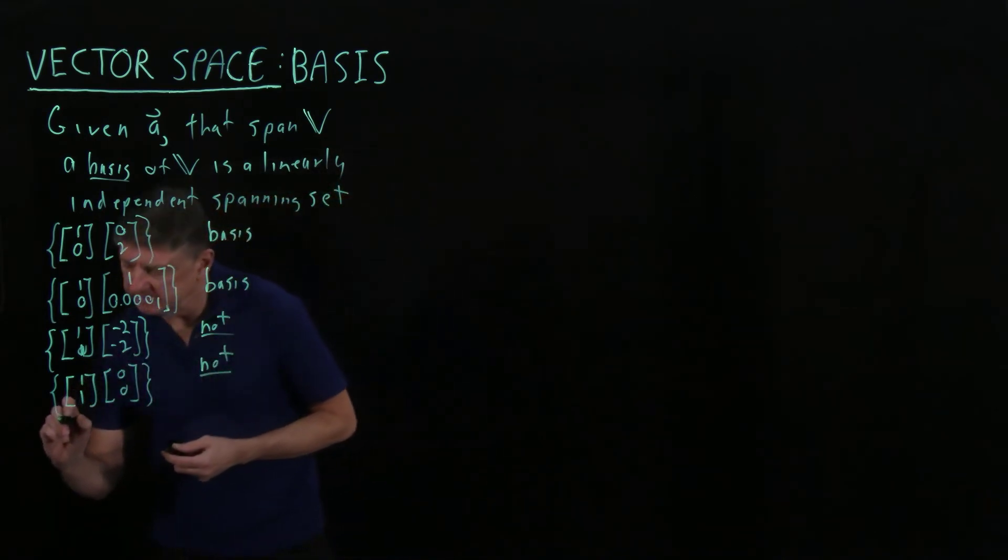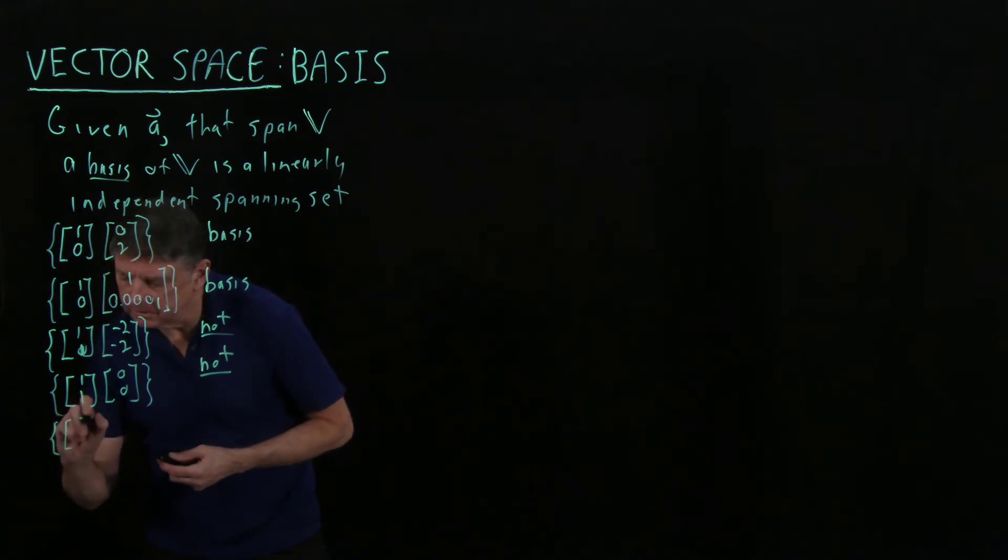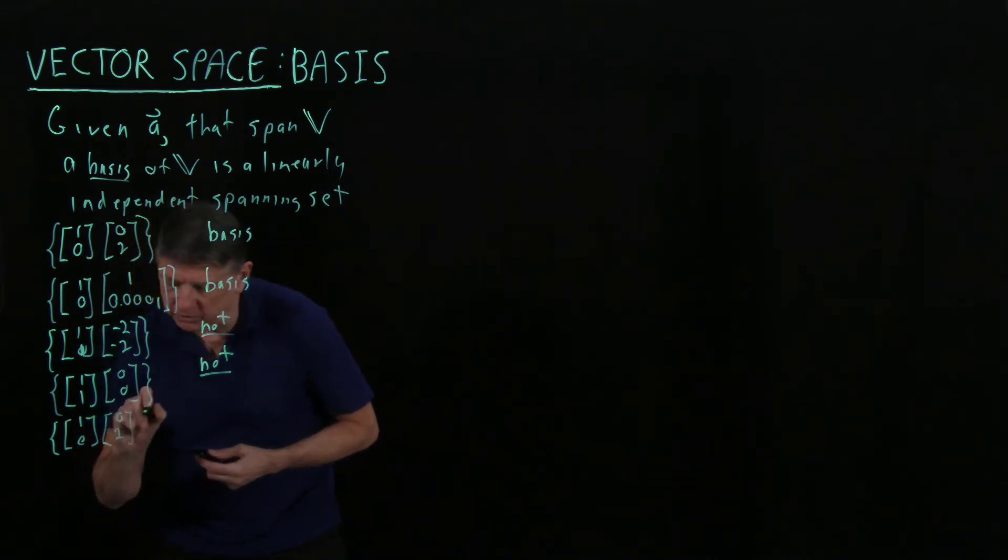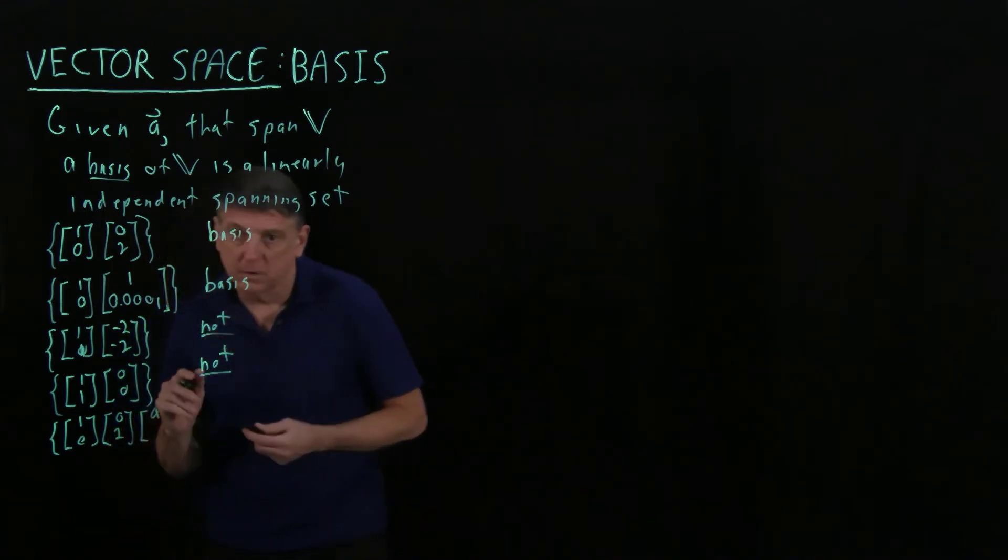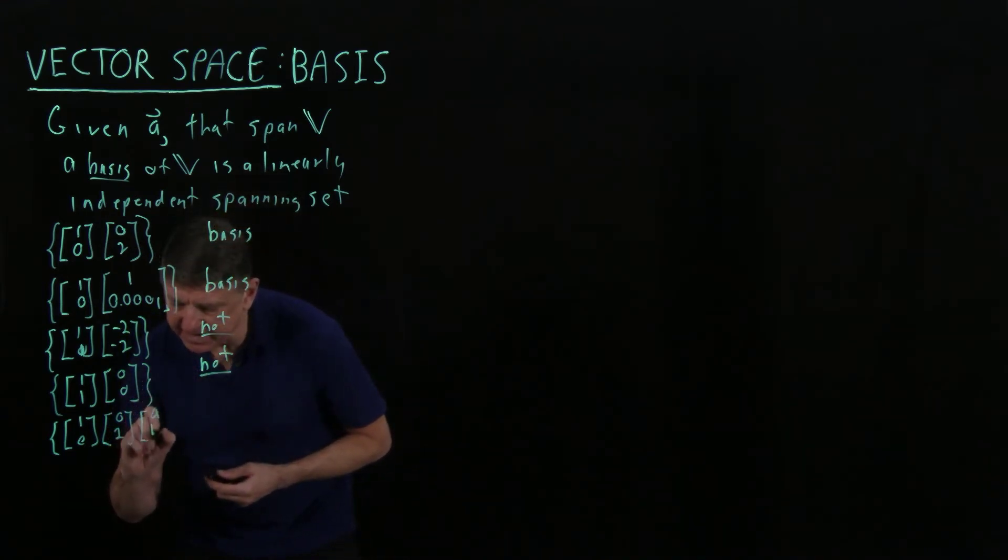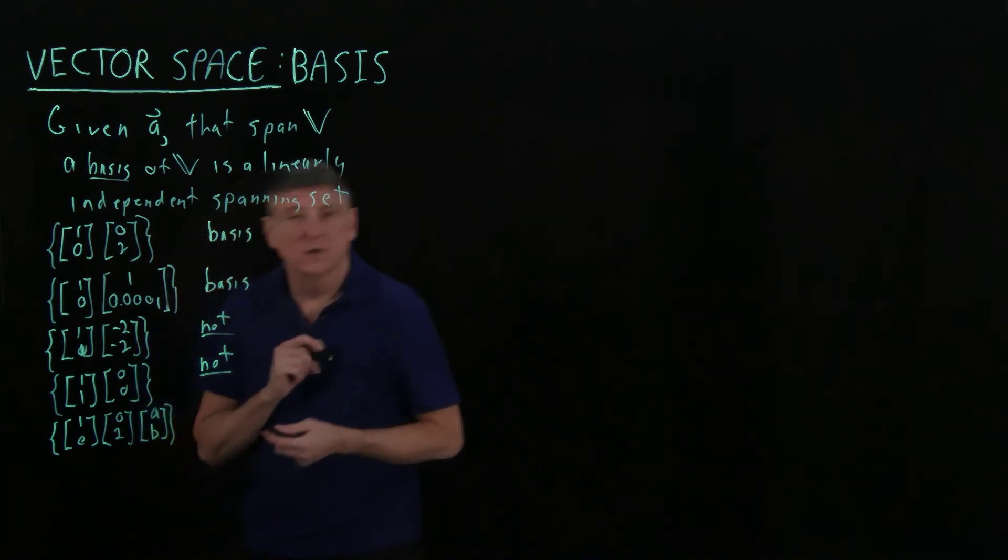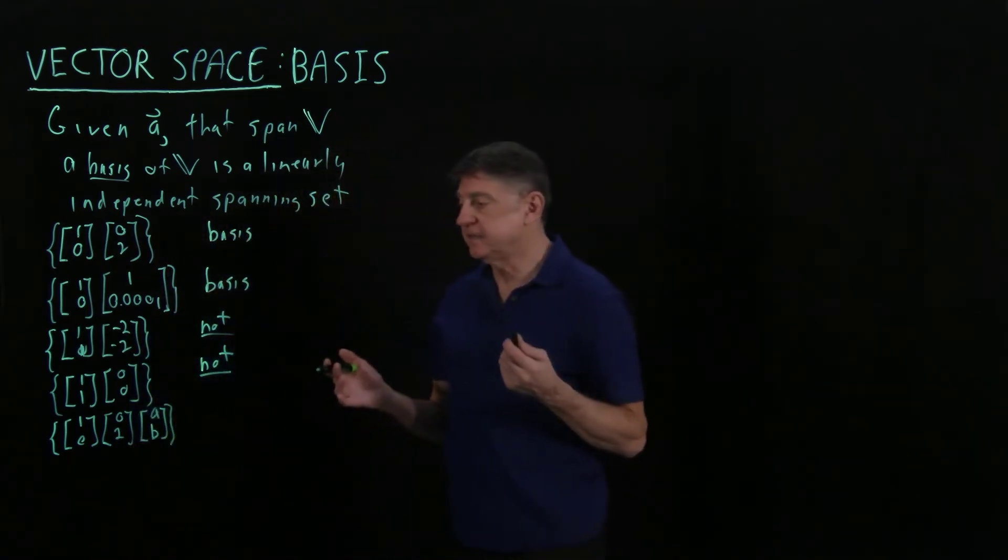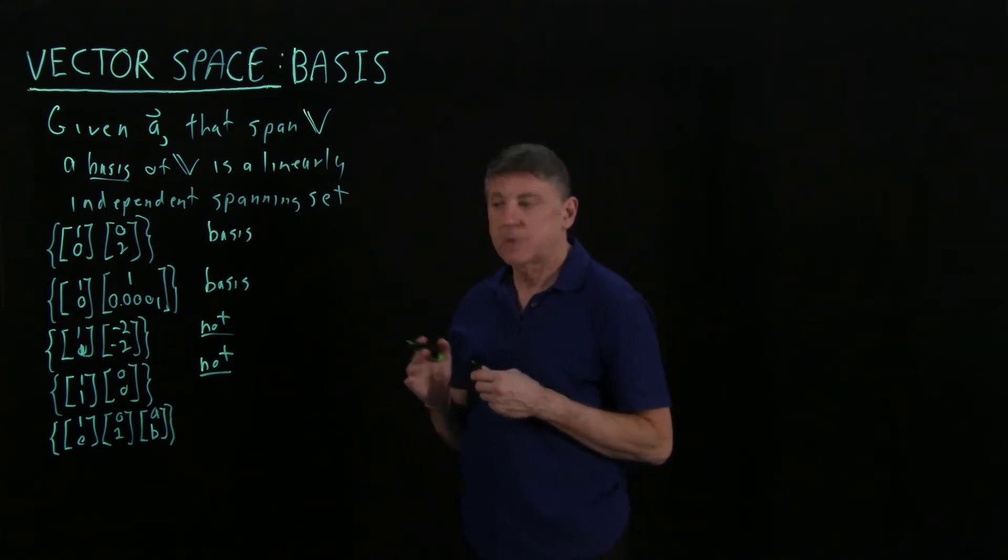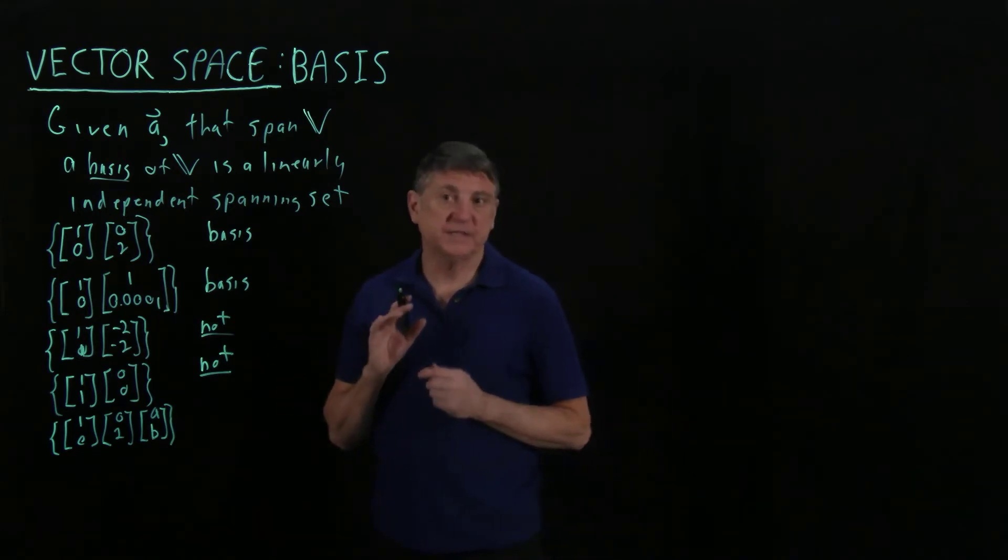Suppose we're given [1, 0], [0, 2], and then a third vector [A, B]. Are these a basis? Well, are they a spanning set? Because this and this failed because they weren't spanning sets. They didn't provide enough information.